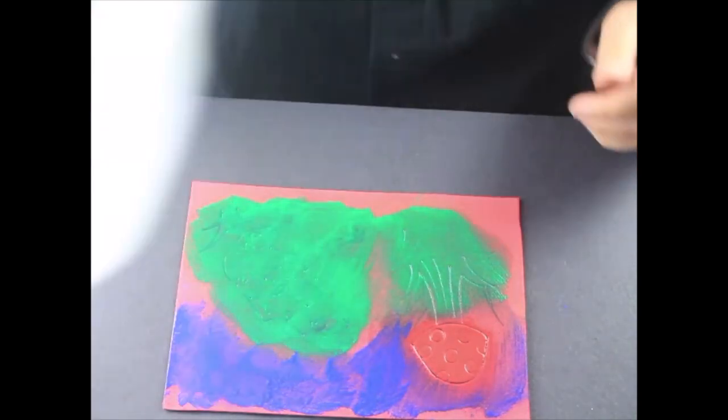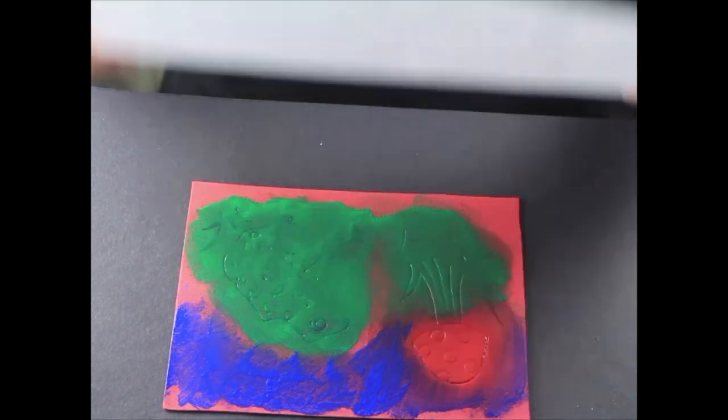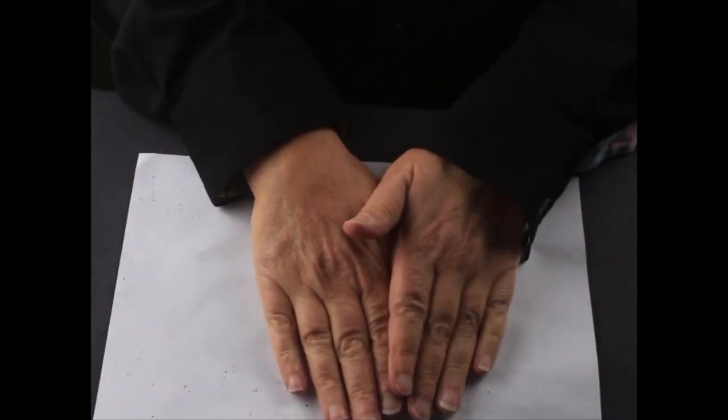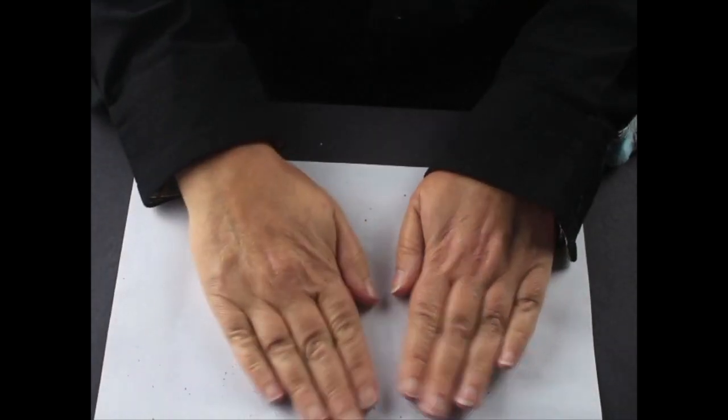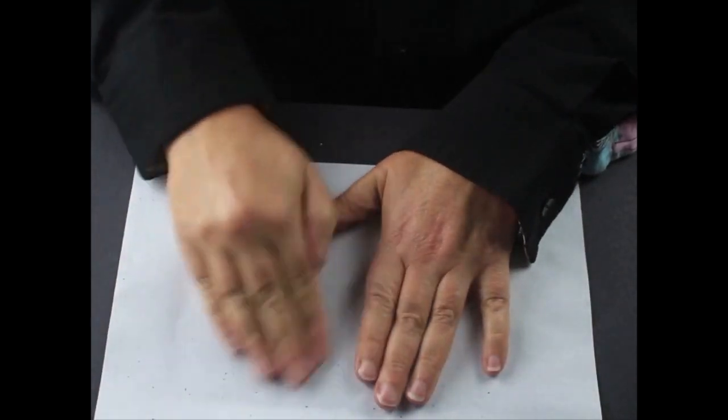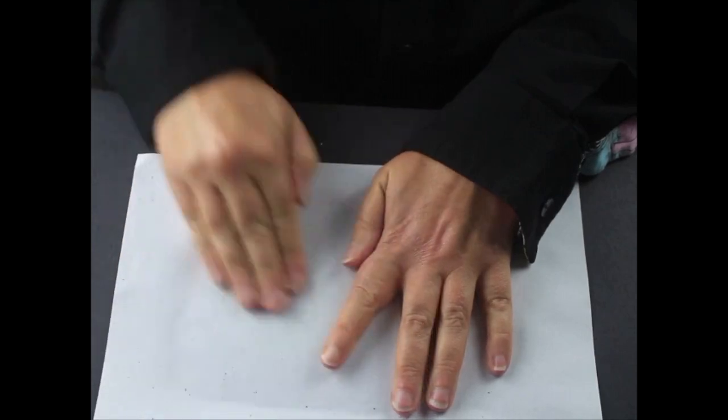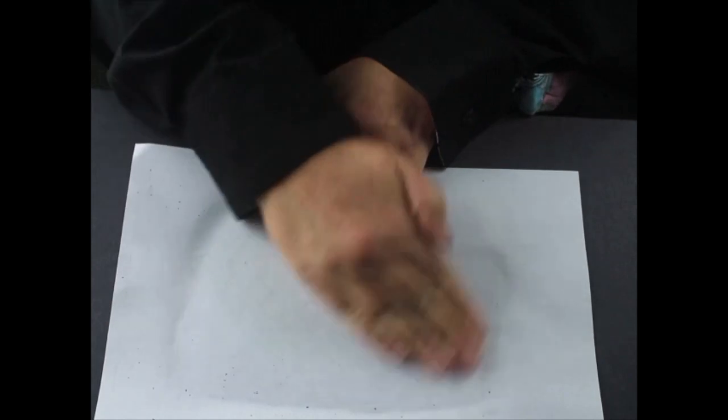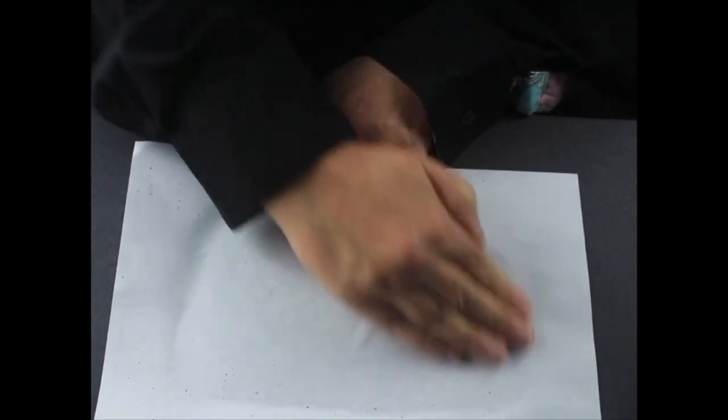So now I'm going to take a piece of paper and all I'm going to do is to drop that piece of paper down on top of the plate and then just smooth over. Now you can use something like a spoon to rub the back of this so that you get a really nice print going into all those lovely indentations that you've created.